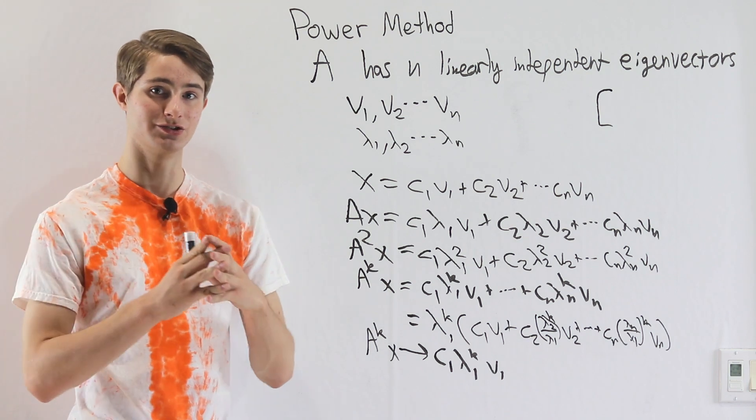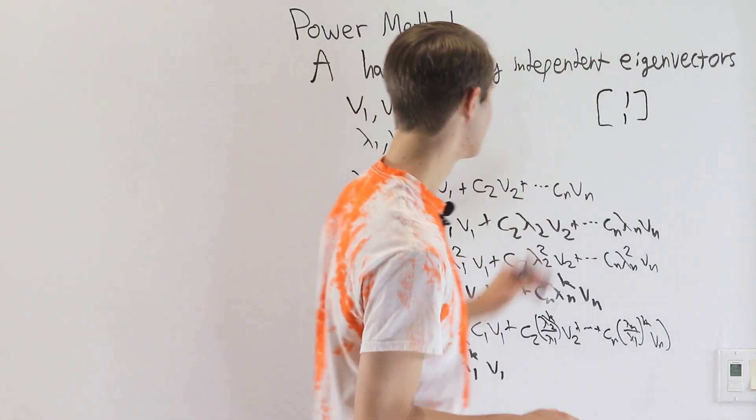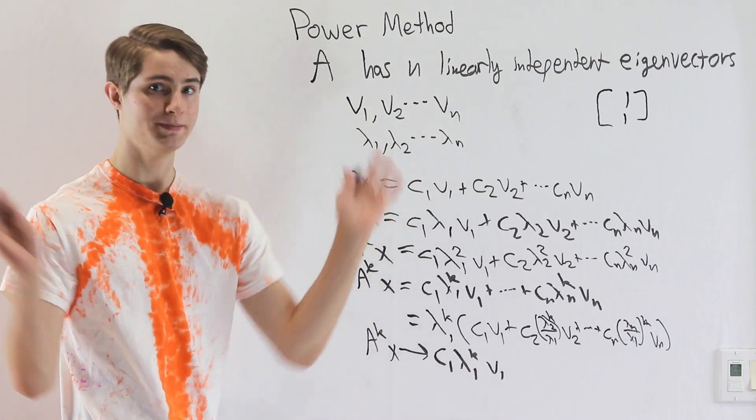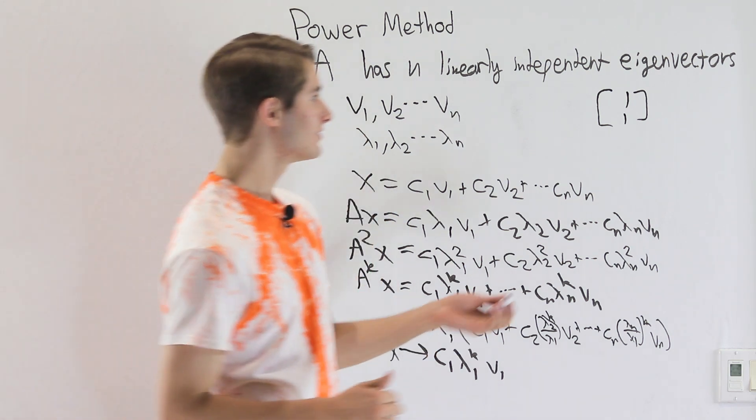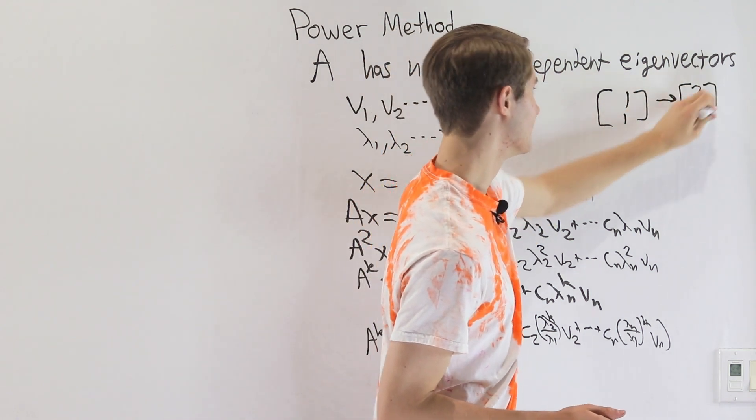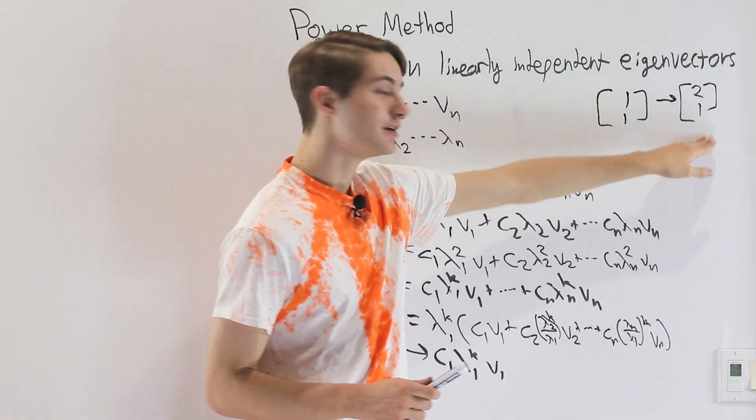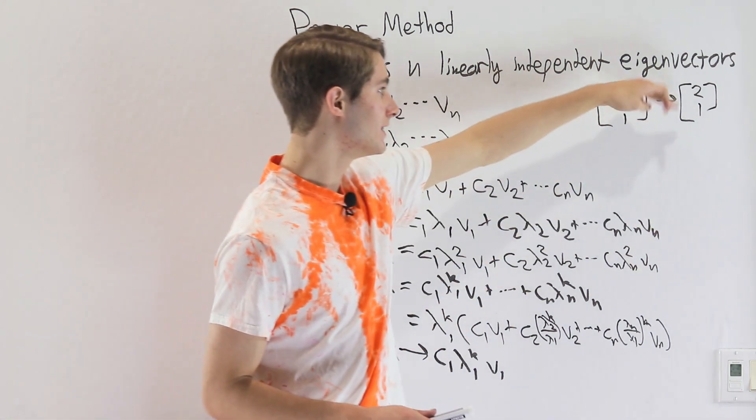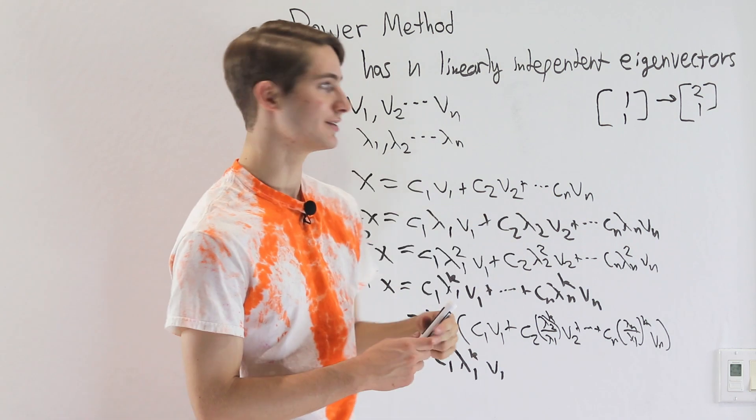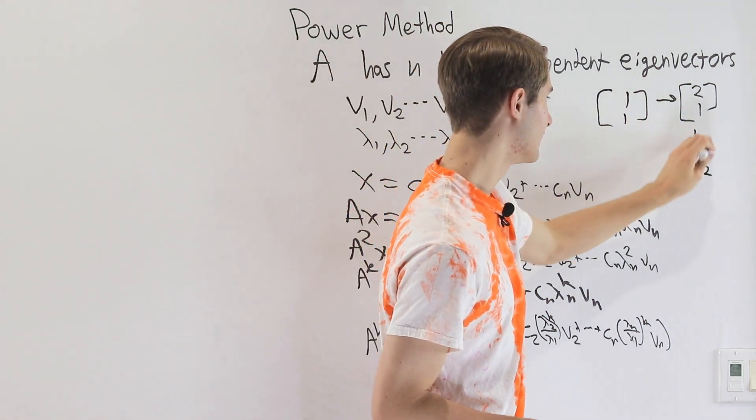So we want to keep our vectors nice and small. What that means is let's say we pick the initial vector 1, 1 for our x, because we can pick anything we want. What we would do is let's say we multiply by A and it turns out to be 2, 1, and that's what we got. What we would do is say, okay, this got bigger. We're going to scale it down by the bigger one of these two values here. So in this case, 2 is bigger. So we would just scale it down to 1, 1 half.